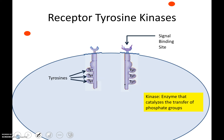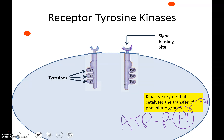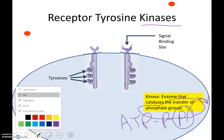They're going to be received by receptor tyrosine kinases. To point out what a kinase is — a kinase is an enzyme that catalyzes the transfer of phosphate groups. If ATP has three phosphates, a kinase is going to take off one of these phosphates and put it onto something else. So seeing that the word kinase is in the title, that's going to imply that these are going to be transferring phosphate groups.